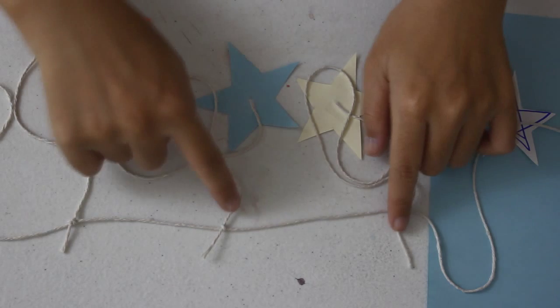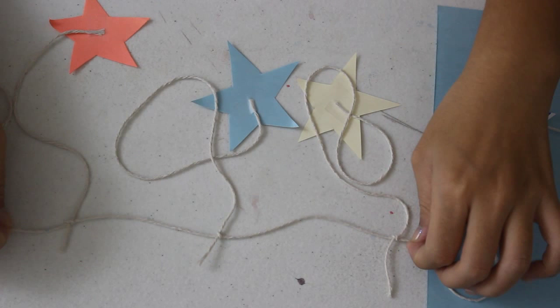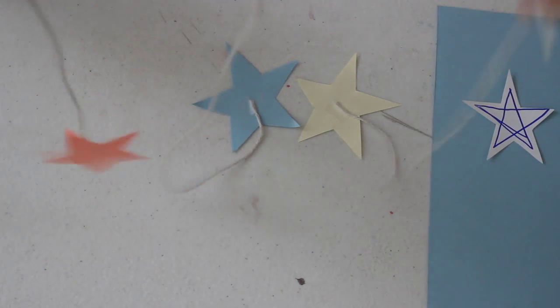You can either cut off the excess from the knots or leave them. It's up to you. I cut mine off just so that it looks a little bit more even and organized. Since I'm a pretty messy person usually, at least I want my DIY project to be a little bit more clean.